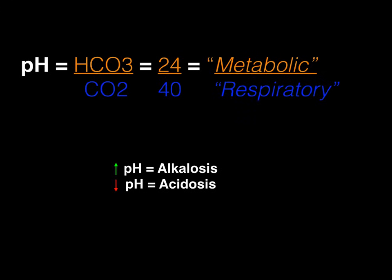The only thing that you're going to have to memorize today is right here on this slide. You need to know that when you set up the pH equation, it's bicarb over carbon dioxide. You also need to know the normal values: a normal pH is 7.40, a normal bicarb — which is our numerator — is 24, and a normal carbon dioxide — which is our denominator — is 40. Anytime we're dealing with changes in bicarbonate, we refer to that as metabolic, whereas anytime we deal with changes in carbon dioxide, we refer to that as respiratory.